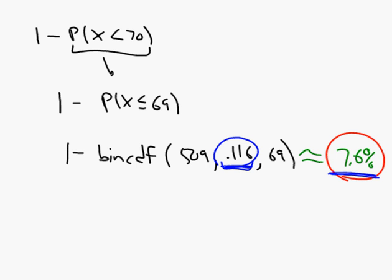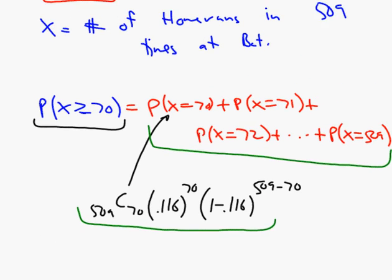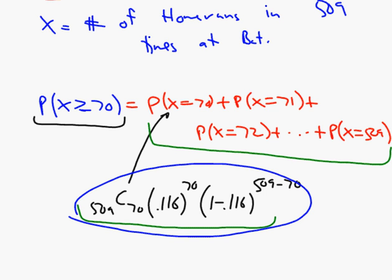But back to how to compute this probability and talk about something practical. Without a calculator, it would certainly be quite a bit of work to try and calculate an expression like this and then do it again for 71 and 72 all the way up to 509. It would be pretty much impossible. So a popular thing to do is use the following fact.